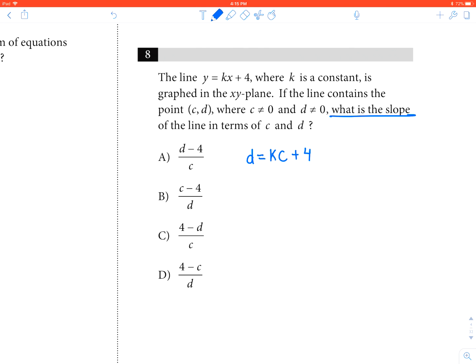Well, if it asks for what is the slope in terms of c and d, it wants k by itself. So I get kc equals d minus 4. Then to get k by itself, I just divide by c, and k equals d minus 4 over c, making the answer A.